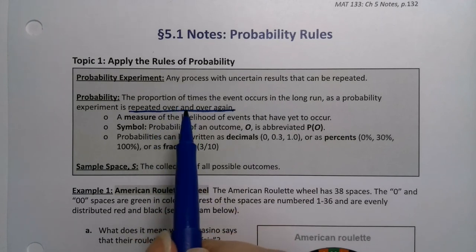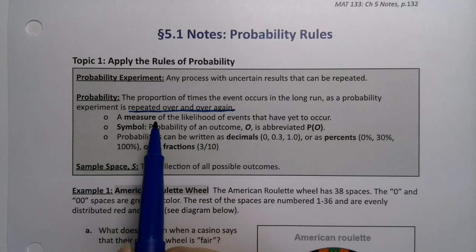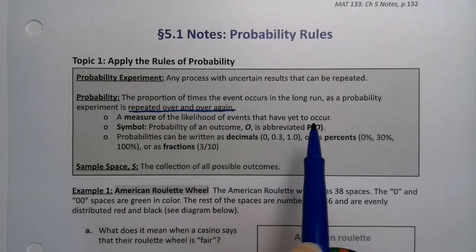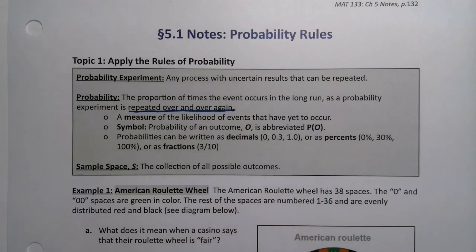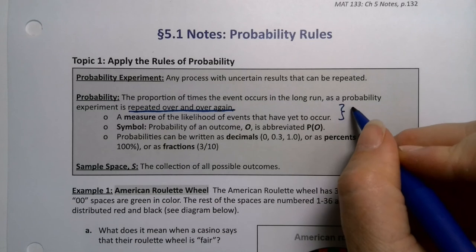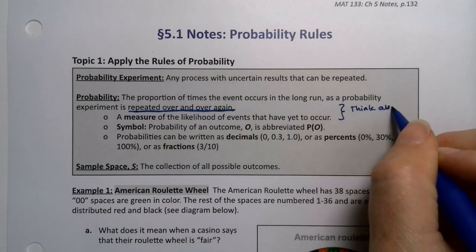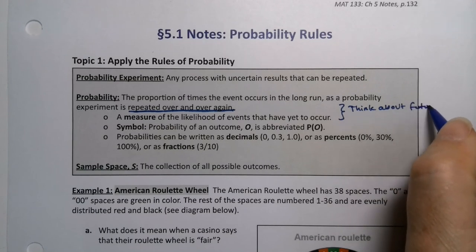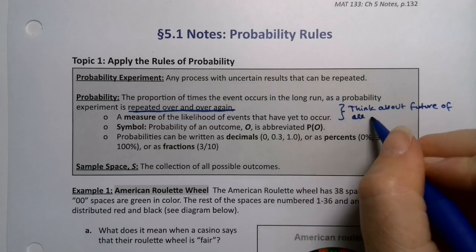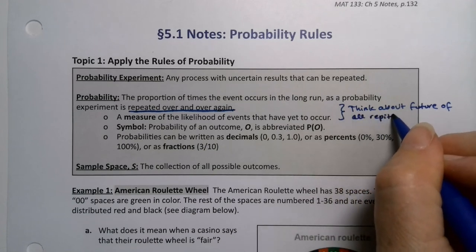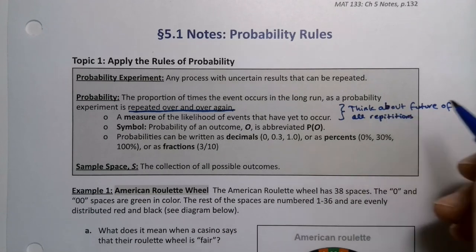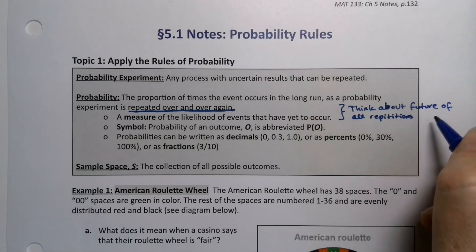Imagine if we do this over and over and over again. Then the probability is the measurement of the likelihood of an event that will occur, or the measure of likelihood of events that have yet to occur. So it's all about the future, thinking about the future of all possible repetitions of the experiment.